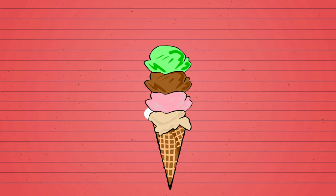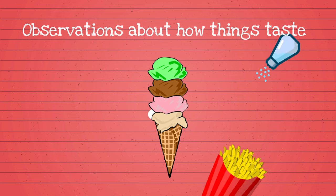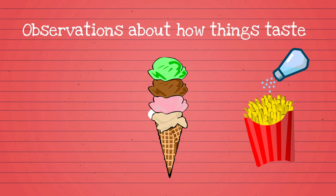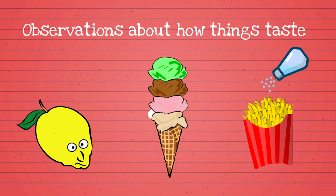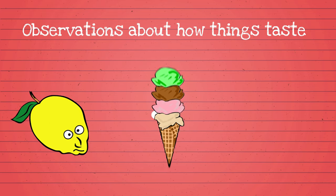When we taste different foods, we're able to tell whether something is sweet, salty, or perhaps even sour like a lemon. These are things that we are able to observe through taste by using our mouth.